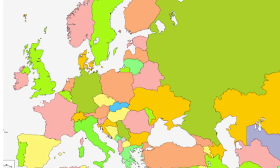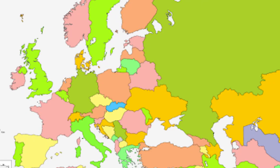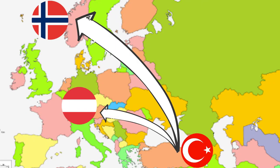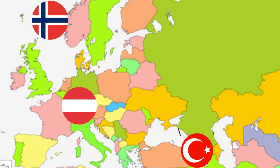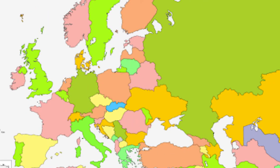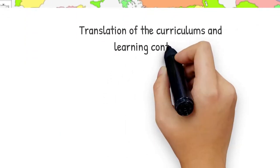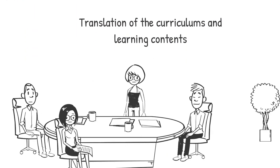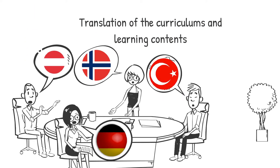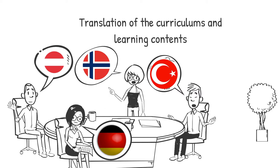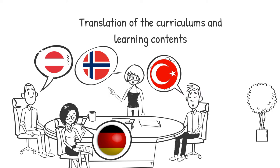Digital learning outcomes were obtained by creating curriculum and learning content for each software and application. All curriculums and learning contents have been translated into four languages: English, Turkish, Norwegian, and German.